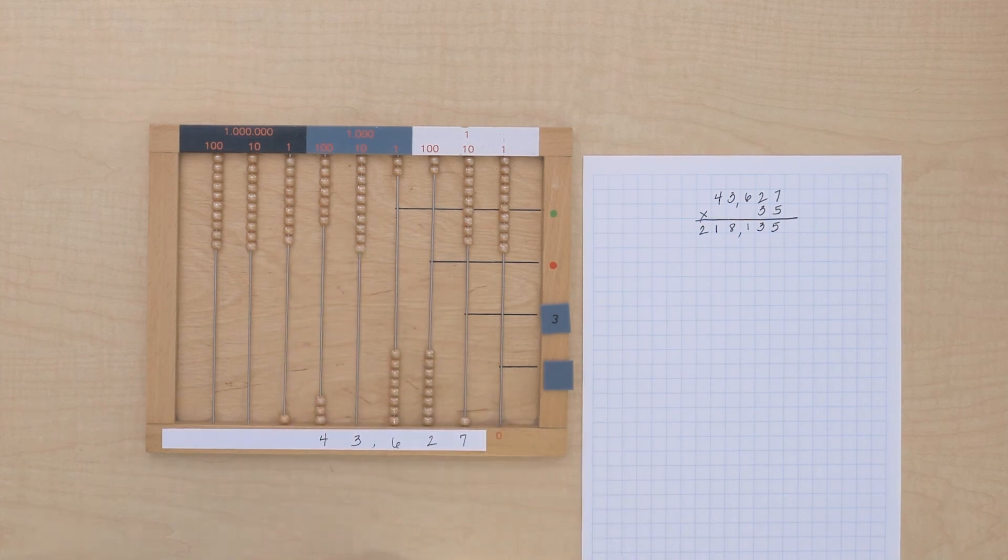All right, now we have the partial product for our tens multiplication. So let's record that.